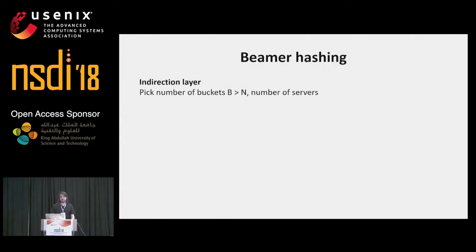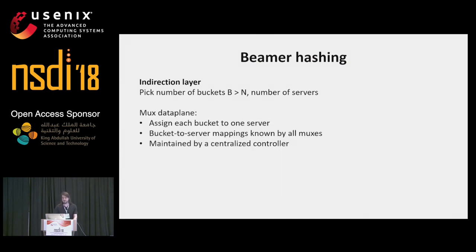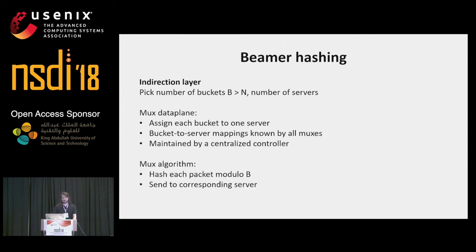With Beamer, we simply added an indirection layer. We pick a number of buckets strictly larger than the maximum number of servers we expect to have at any one time. Each bucket is assigned to a server, and the bucket-to-server mappings are known by all of the muxes. A centralized controller maintains these mappings, so it can implement whatever hashing scheme it desires. Packets hitting the muxes are simply hashed modulo the number of buckets and sent to the corresponding server.